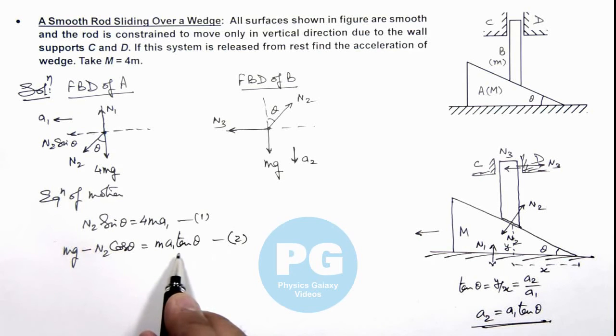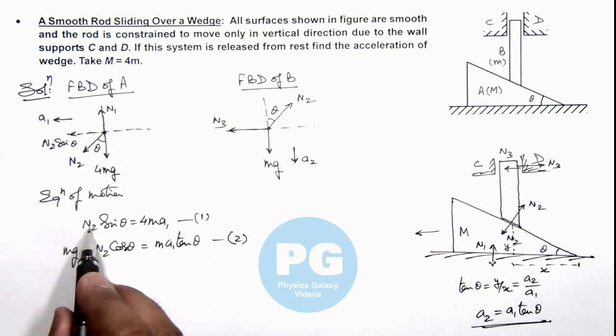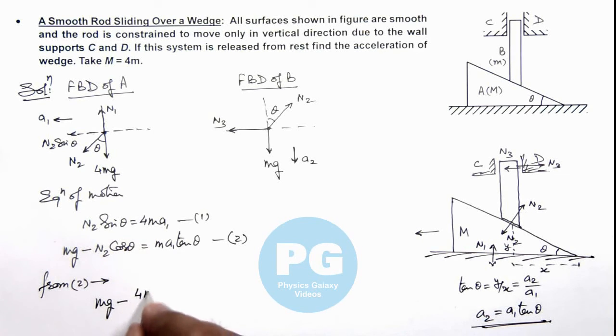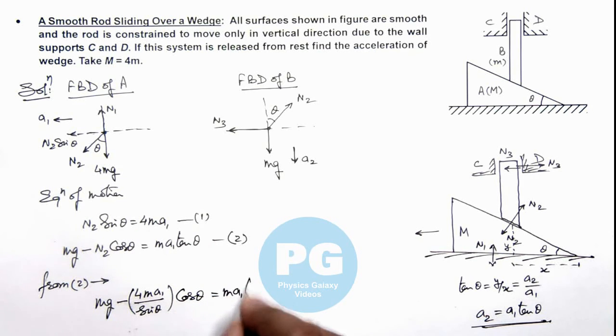In these equations, if we substitute the value of N2 from here to here we get the value of a1. So here we can write from equation 2, we are getting mg minus the value of N2, we can write as 4m a1 by sin theta. We are calculating the value of N2 from equation 1 and substituting here. So this is m a1 tan theta. Now if we continue here this equation, we can cancel the value of mass and simplify for a1.